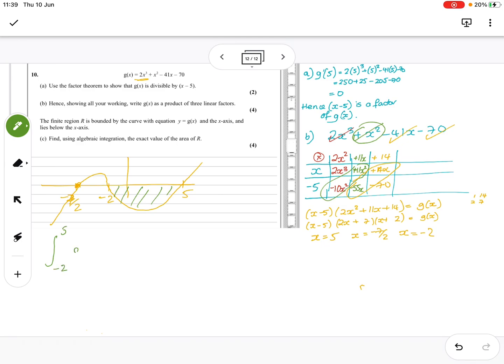So I just need to integrate between -2 and 5 of g(x) with respect to x. So I'm going to integrate that. I've got to increase the power by 1, divide by the increased power, plus x, increase the power by 1, divide by the increased power, minus 41, increase the power by 1, divide by the increased power, minus 70x.